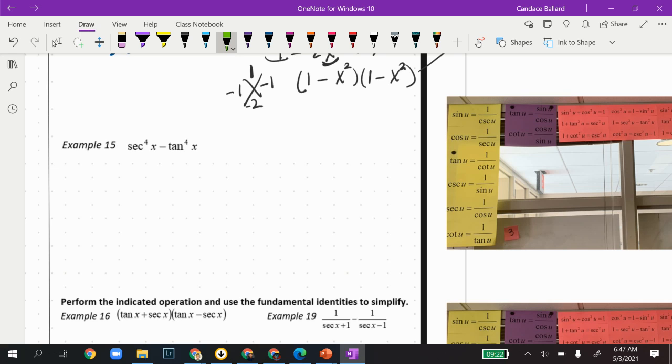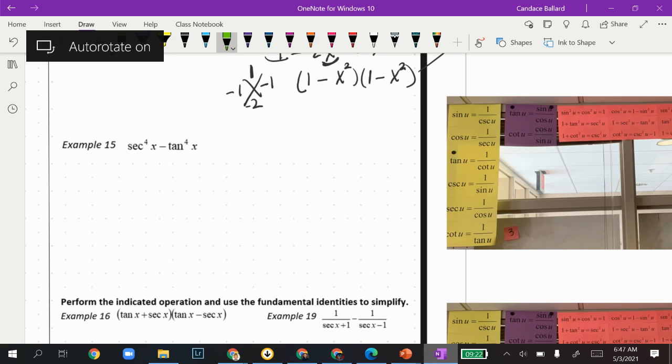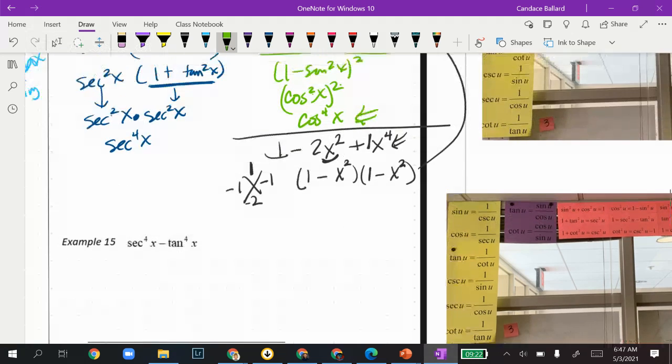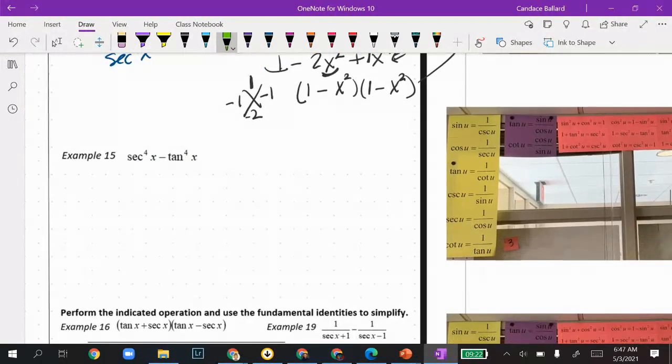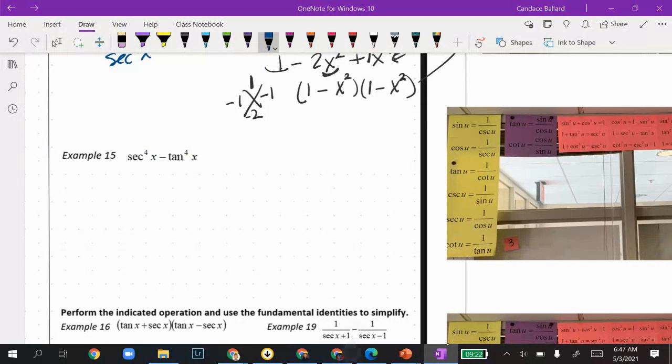In this video, we're going to continue topic 10.1, looking at example 15. When I said we wouldn't be focusing on difference of squares, I was completely wrong. We are still supposed to be factoring, and it looks like we have something that looks like x to the fourth minus y to the fourth, which are even exponents.